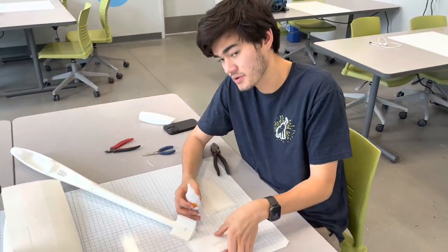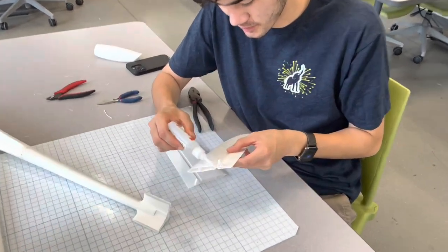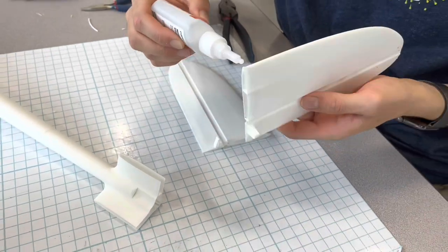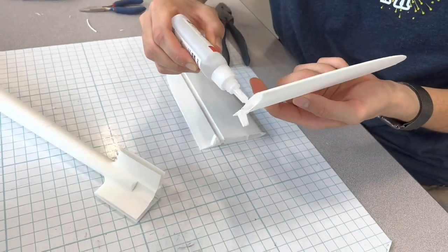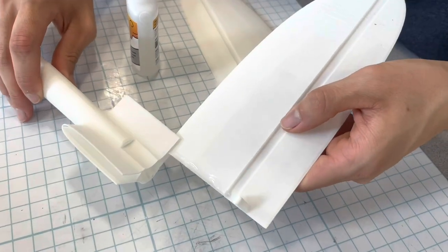Now that we've got the fuselage together we're going to install the tail. To install the tail we're going to put super glue of medium strength around this area and slide it into the fuselage.